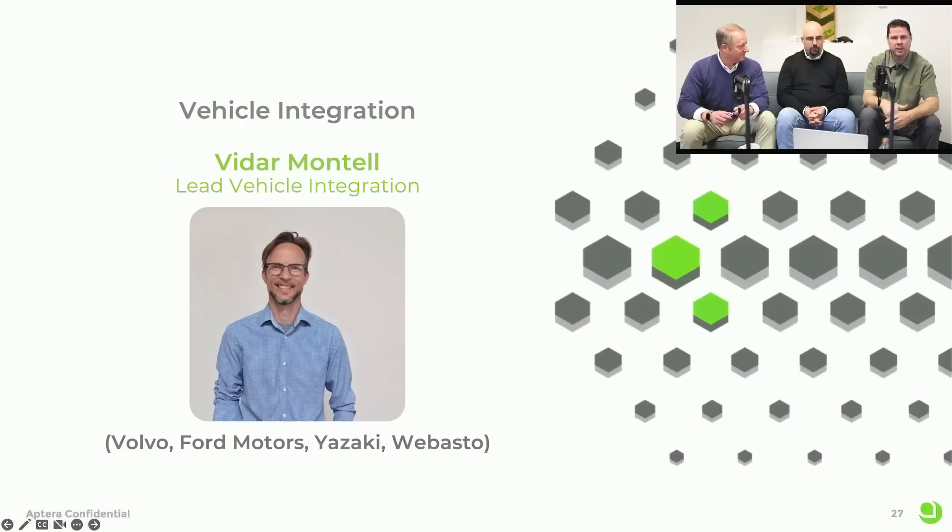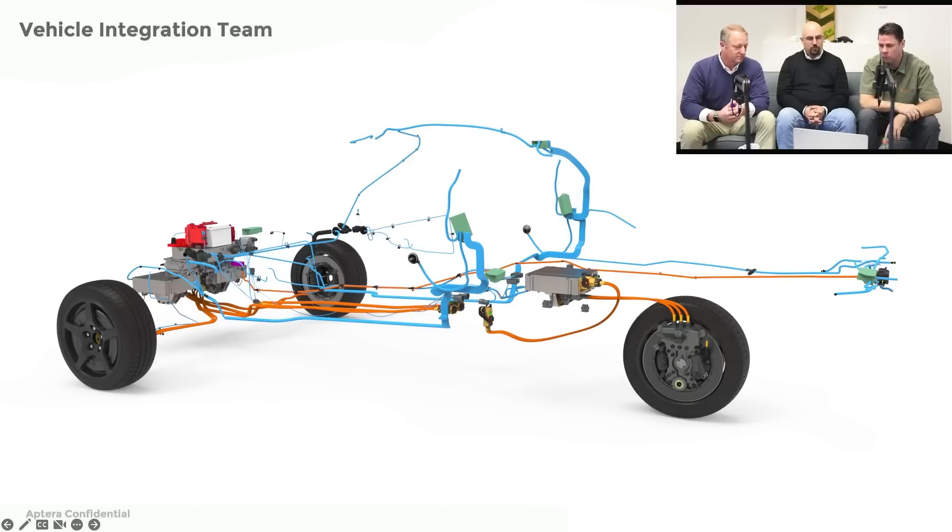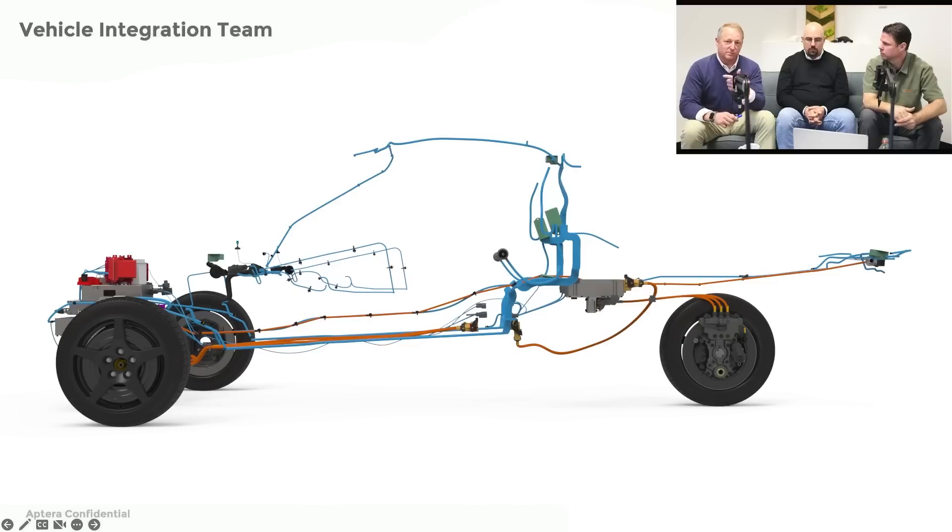Vidar has been doing amazing things in vehicle integration, mostly on the low voltage side. This shows you the low voltage harnessing. Aptera has taken what we call a zonal approach for low voltage I/O. That means instead of having a traditional big, unwieldy copper wiring harness that goes over the whole vehicle that weighs hundreds of pounds, we have actually a very small harness that connects point-of-use controllers around the vehicle and it connects with a LIN bus.